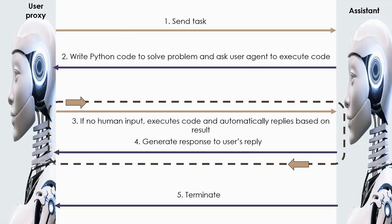This slide shows the interaction between the two agents: the UserProxy and the Assistant. The assistant tries to get the result with the prodding of the user proxy. First, the user proxy sends the task to be completed to the assistant. The assistant writes a Python code to solve the problem and asks the user agent to execute the code. It is also possible for it to get the answer from an LLM and not necessarily write Python code.